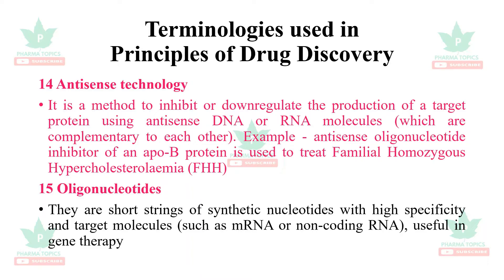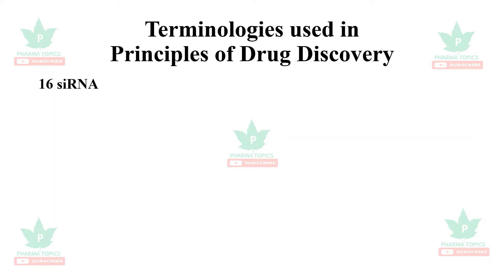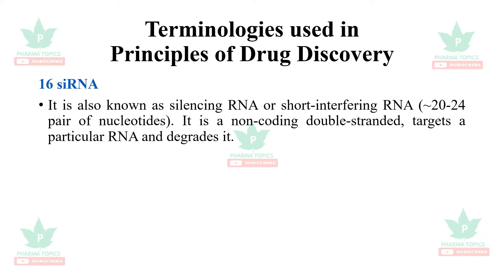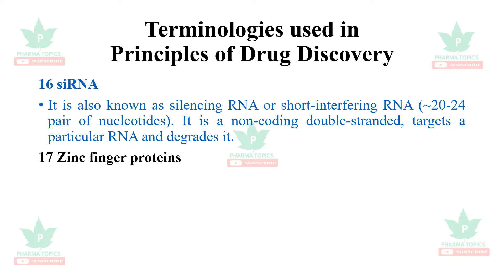Next is oligonucleotides. They are short strings of synthetic nucleotides with high specificity for target molecules such as mRNA or non-coding RNA, and are useful in gene therapy. Next is siRNA, also known as silencing RNA or short interfering RNA — it approximately contains 20 to 24 nucleotide pairs. It is a non-coding double-strand RNA that targets a particular RNA and degrades it.